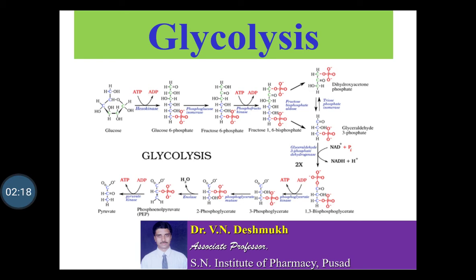Phase 1 consists of the first 5 steps of glycolysis. In phase 2, redox reactions occur, energy is conserved in the form of ATP, and 2 molecules of pyruvate are formed. The last 5 reactions of glycolysis constitute phase 2.